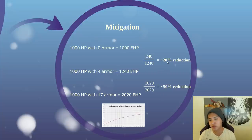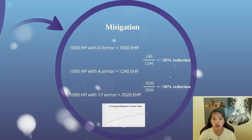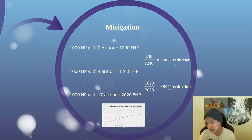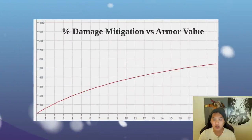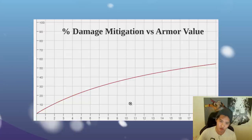So four armor gets you 20% reduction — that's about roughly 5% per point. And then with 17 armor you get 50% reduction, which is roughly 3% reduction per point. So you can see that as you grow higher with armor values and get more and more, your damage mitigation is going to be less. It's going to taper off as you get very high armor values.